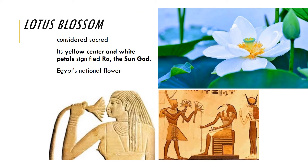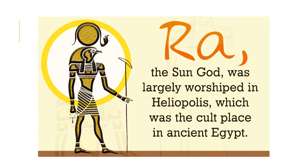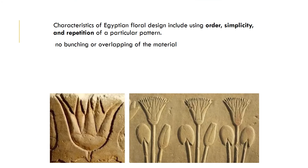The lotus blossom was considered sacred by the Egyptians — the white petals represent the rays of the sun and the yellow center represents the sun itself, signifying their sun god Ra, whom they largely worshipped in Heliopolis. Characteristics of Egyptian floral design include order, simplicity, and repetition of a particular pattern. There is no bunching or overlapping from flower to flower — it is very organized and simple.